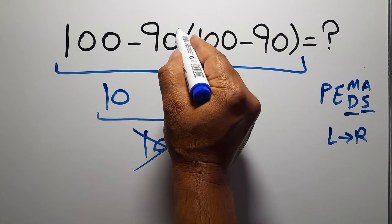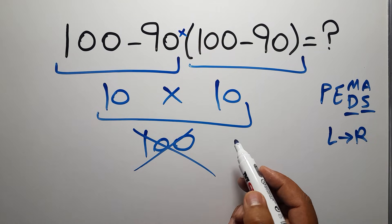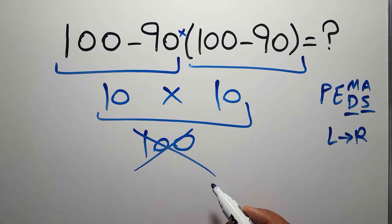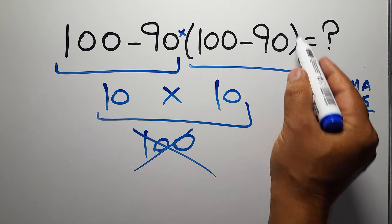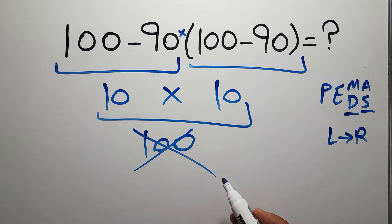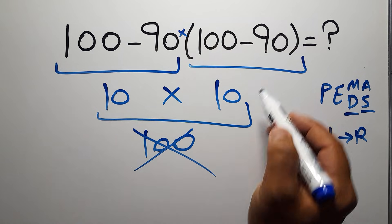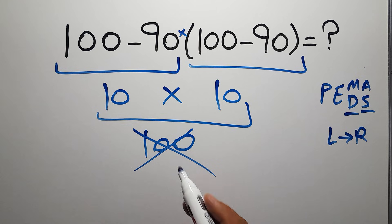In this expression we have one subtraction, one multiplication, and one parentheses. Inside this parentheses we have one subtraction. So first we have to do this parentheses, not this subtraction. If you do this subtraction before this parentheses or this multiplication, it is wrong.